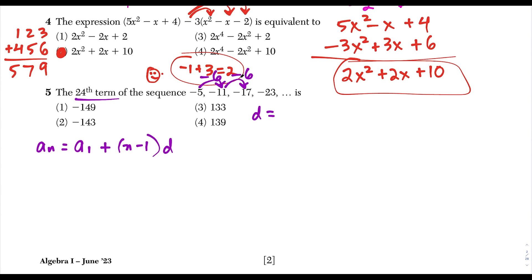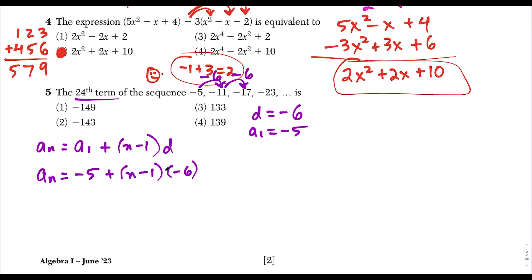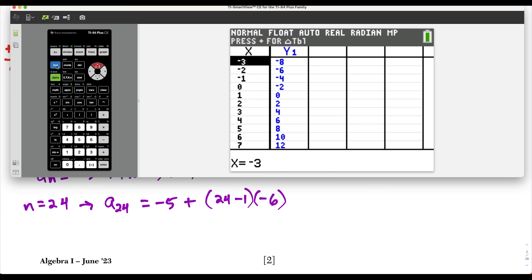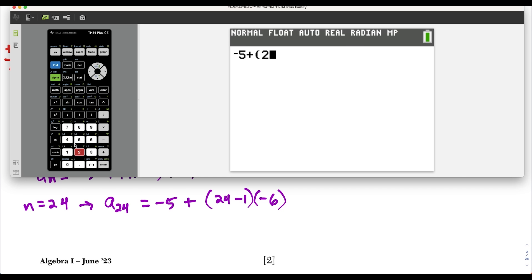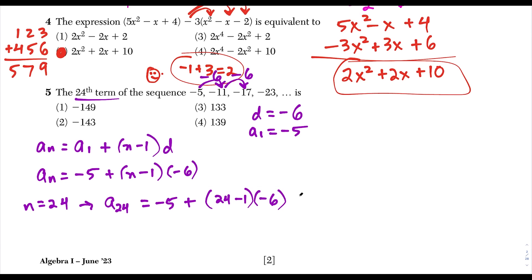Plugging into the formula: a sub 24 equals negative 5 plus 24 minus 1 times negative 6. On the calculator: negative 5 plus 23 times negative 6 gives negative 143. So the 24th term is negative 143, which matches choice 2. As an alternate method, entering the terms into a stat list and running a linear regression gives y equals negative 6x plus 1, and the table confirms the 24th term is negative 143.